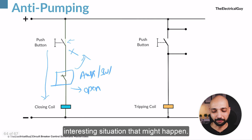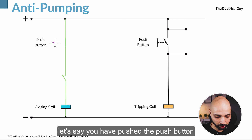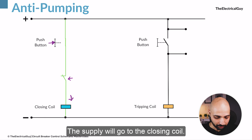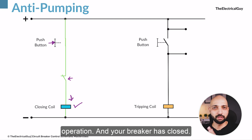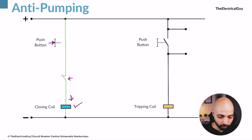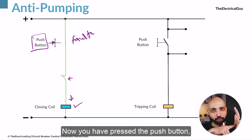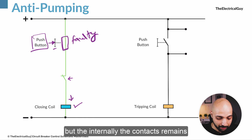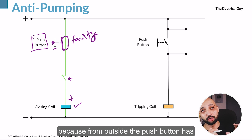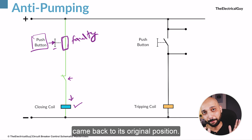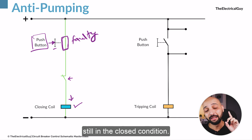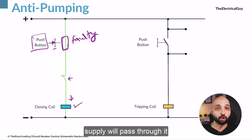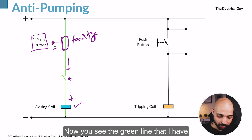Now let's talk about the interesting situation that might happen. You have pushed the push button, the breaker is in open condition, the NC contact is closed, supply goes to the closing coil, the closing operation initiates, and your breaker has closed. Now let's say this push button is in a faulty condition — you pressed it, released your hand, and physically it came back to its original position, but internally the contacts remain in the closed condition. You cannot identify this from the outside because externally the push button returned to its position, but internally the contacts are still closed, so supply will always pass through it.